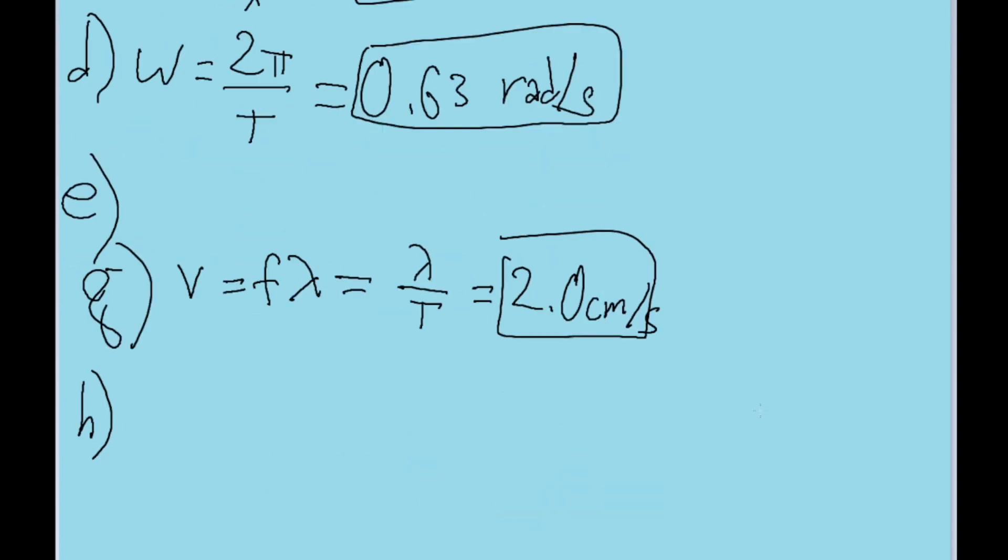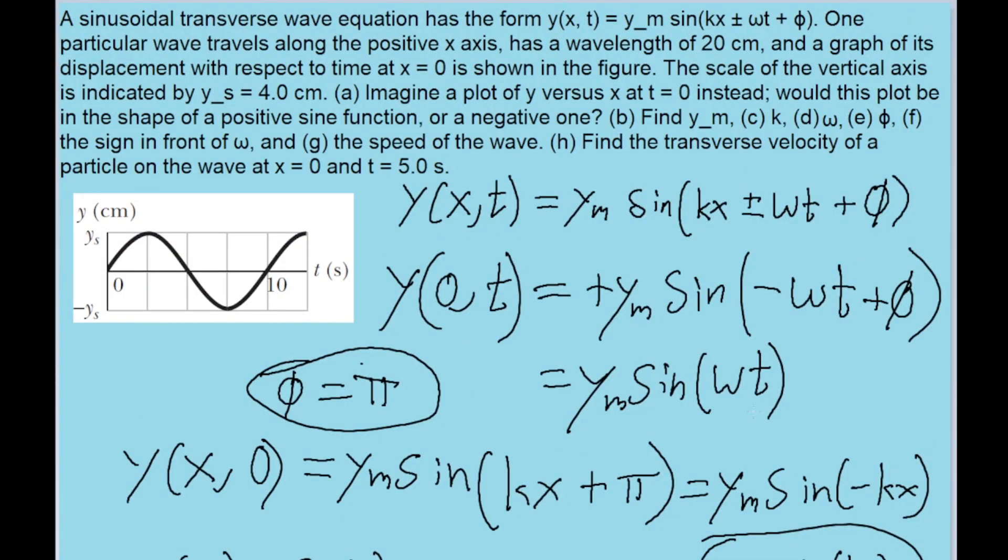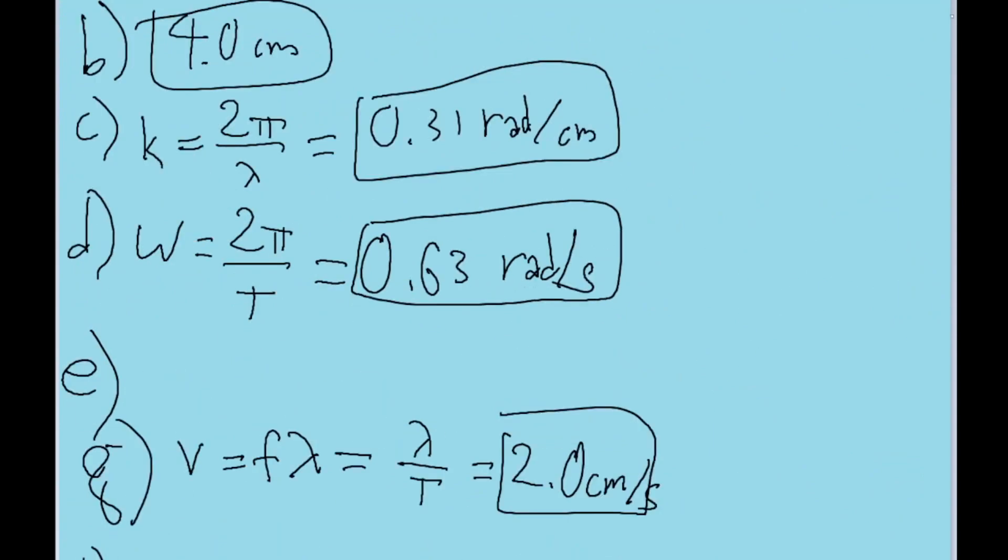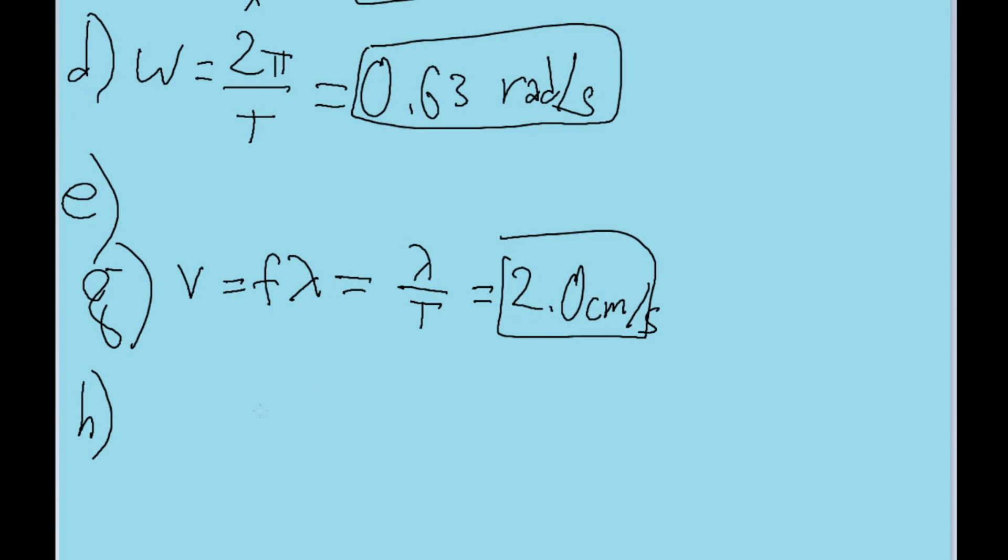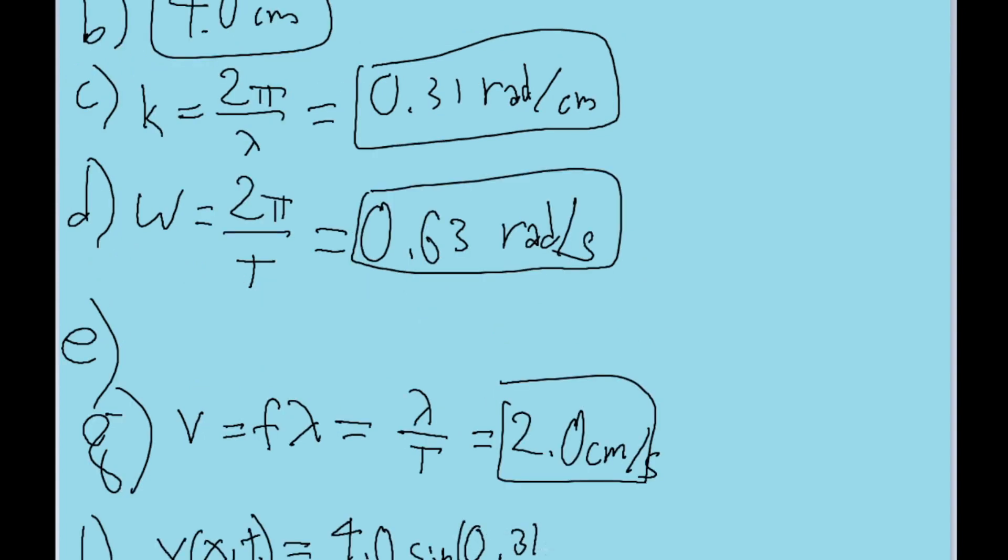And lastly, the final part of the problem asks us to find the transverse velocity of the wave when x equals 0 and t is equal to 5 seconds. Transverse velocity can be found by simply taking the derivative of y, the transverse position of the wave, with respect to time. So now that we've spent the last bunch of parts of the problem figuring out all of the other constants, let's set up a formula for the wave that we can take the derivative of. The full formula here, y(x,t) is equal to 4 centimeters times the sine of 0.31x minus 0.63t plus π, because that's where the phase shift is.